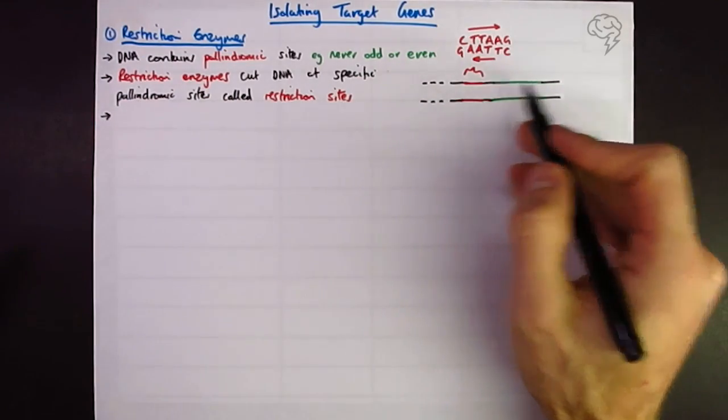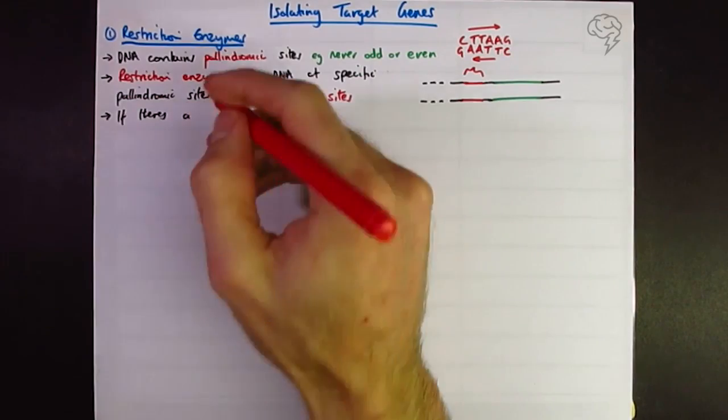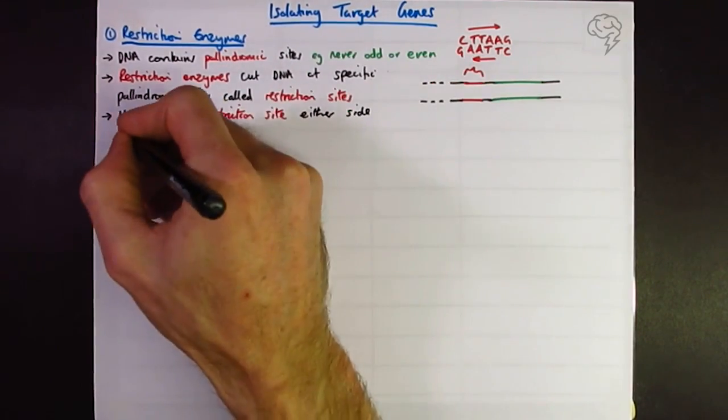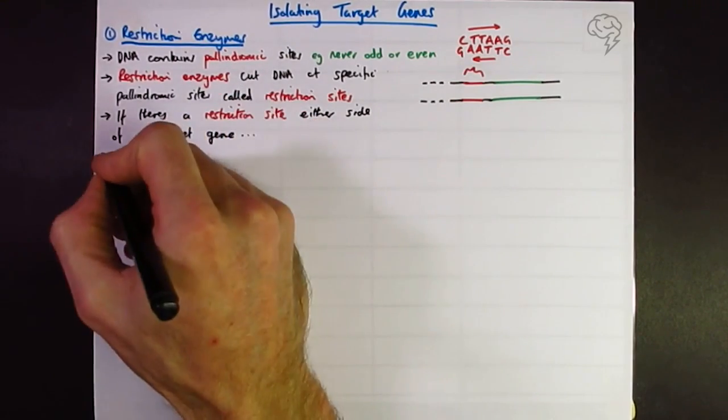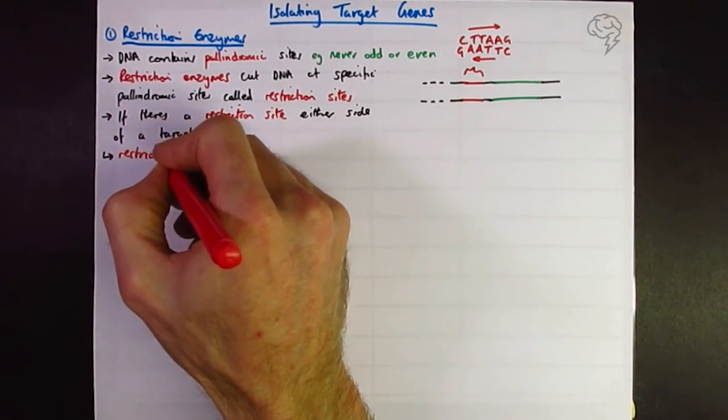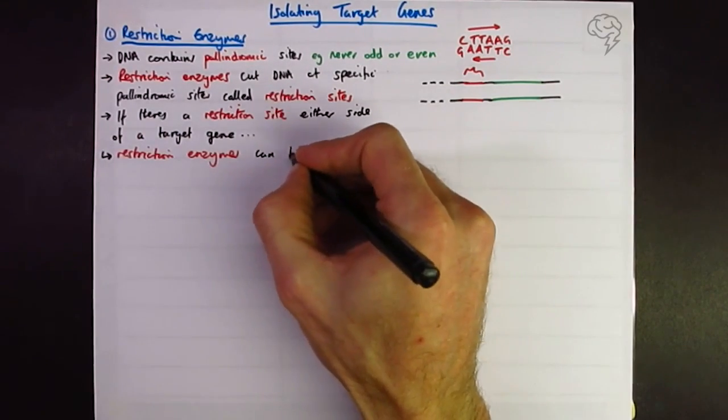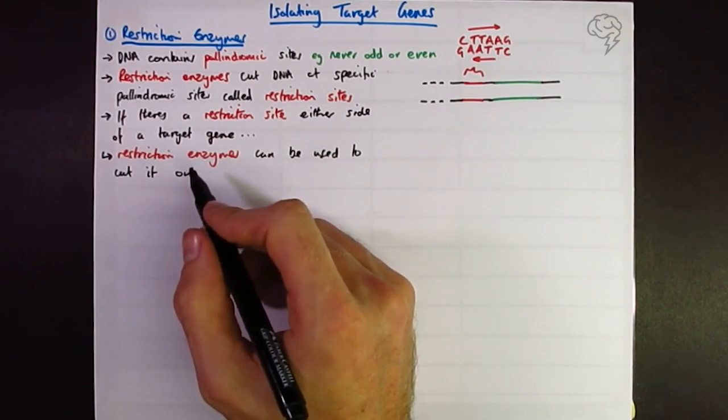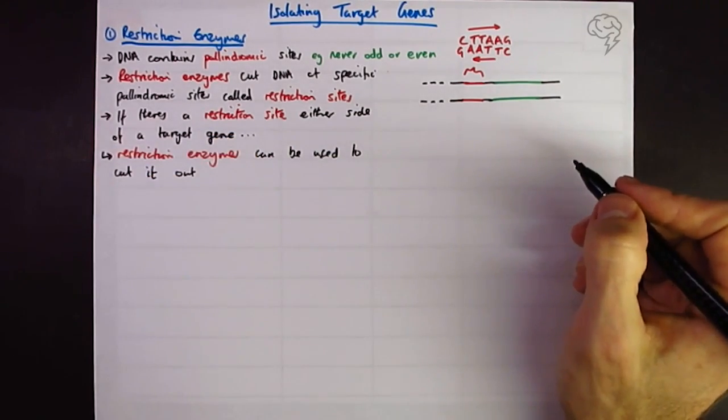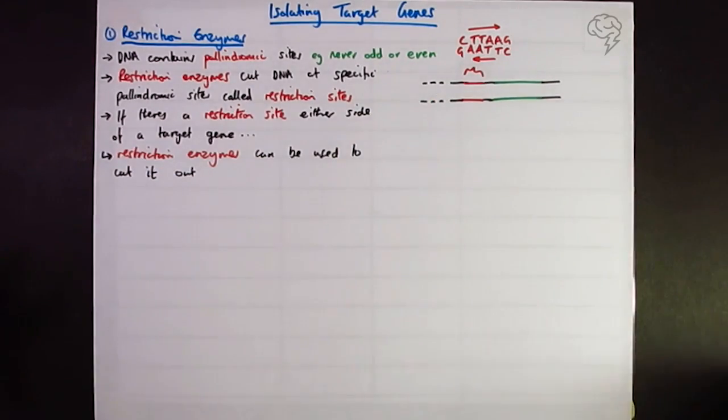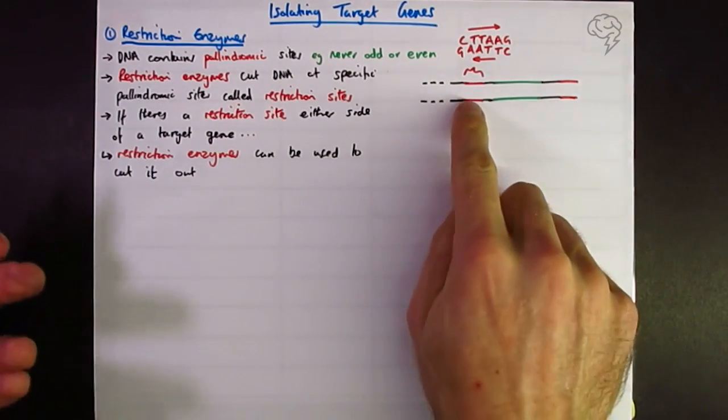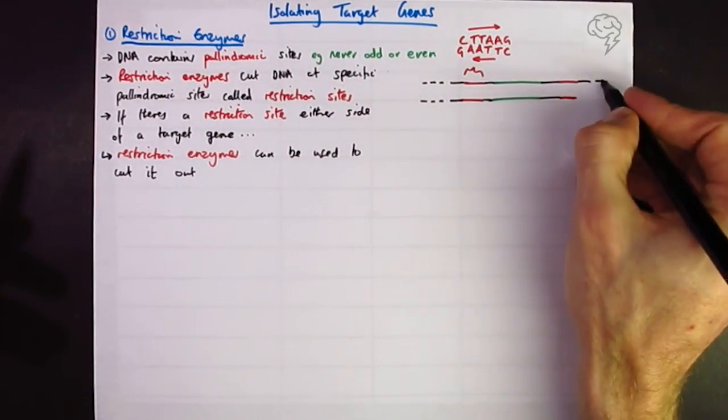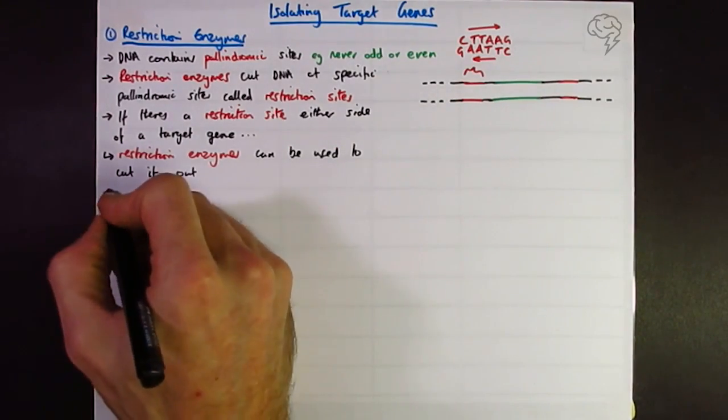So next up we can say if there's a restriction site, one of these guys, either side of the target gene, we can use it to cut it out. Be a bit careful with your 'it' here. I'm referring to the target gene. If in doubt, use target gene again. So let's draw another restriction site on this side. Could be the same restriction site, could be a different restriction site, in which case you'd need a different enzyme because they're specific. The palindromic sequence determines which restriction enzyme is needed.